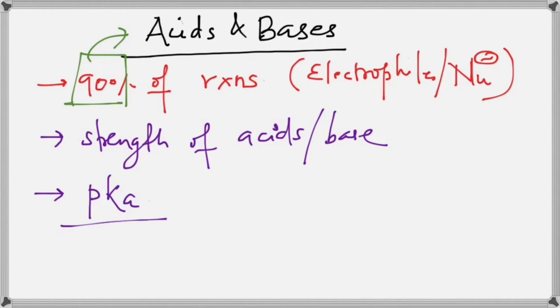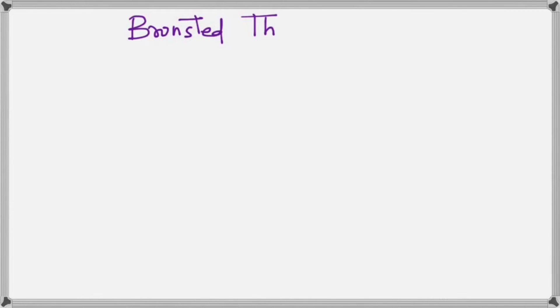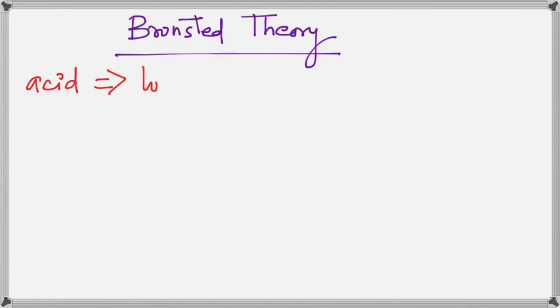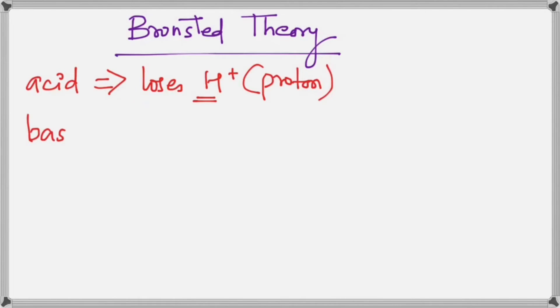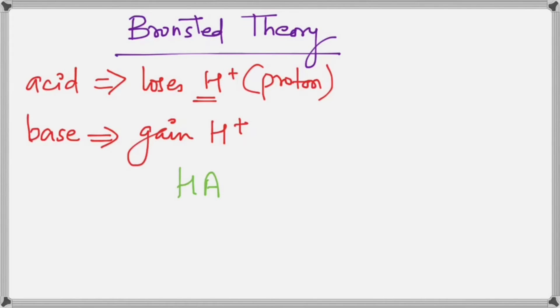Let's go ahead and start with the definition of acids and bases. We will follow the Brønsted definition. Brønsted is the name of a scientist who gave a theory suggesting that an acid is something which can lose a proton. We write a proton as H⁺ because a hydrogen ion has no electron. So an acid is something which loses a proton, and a base is a substance that can gain H⁺.